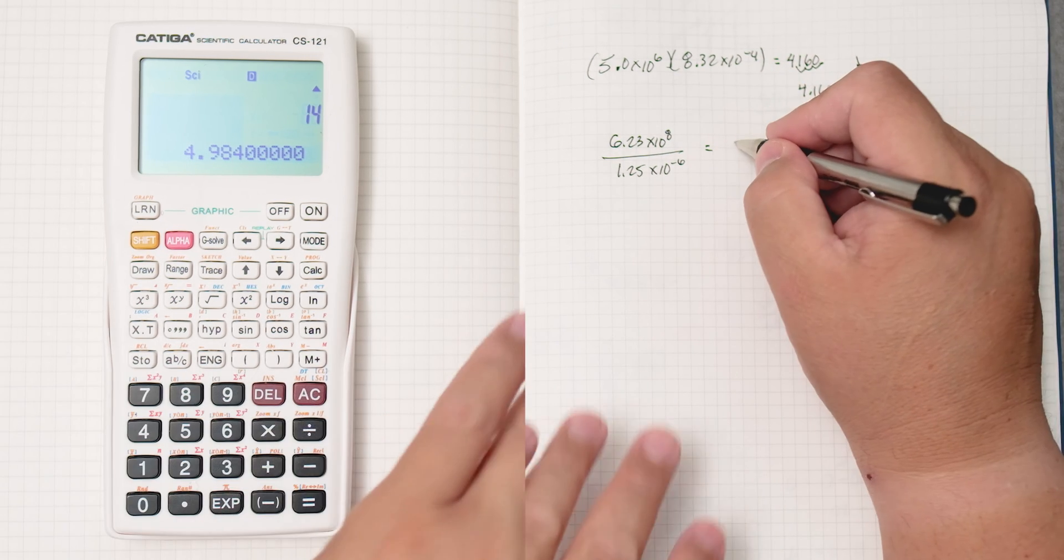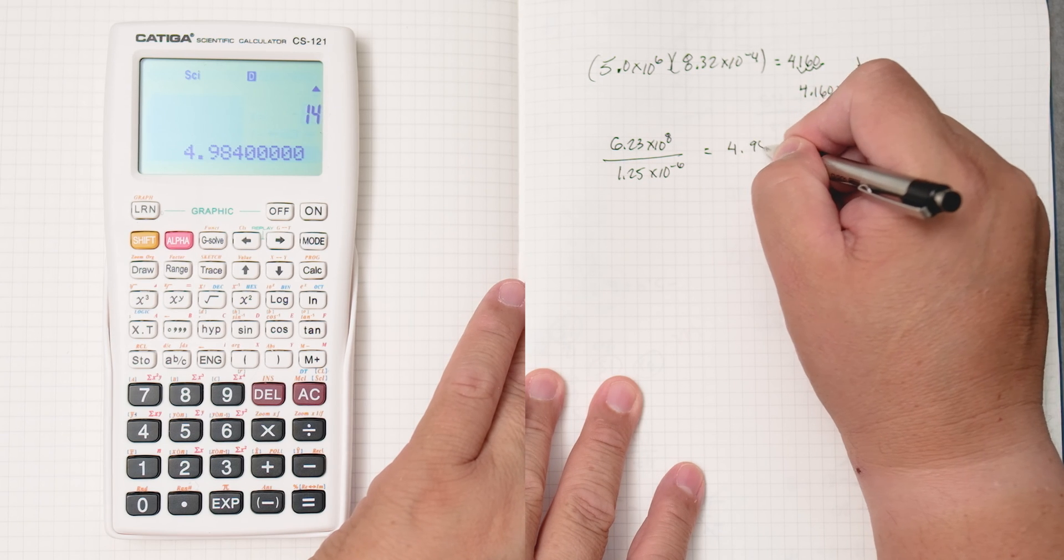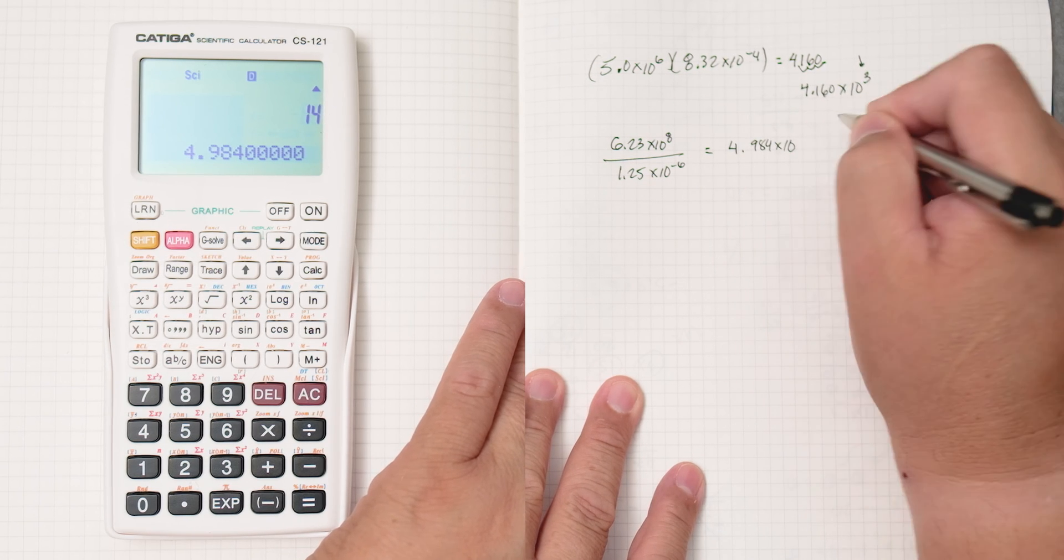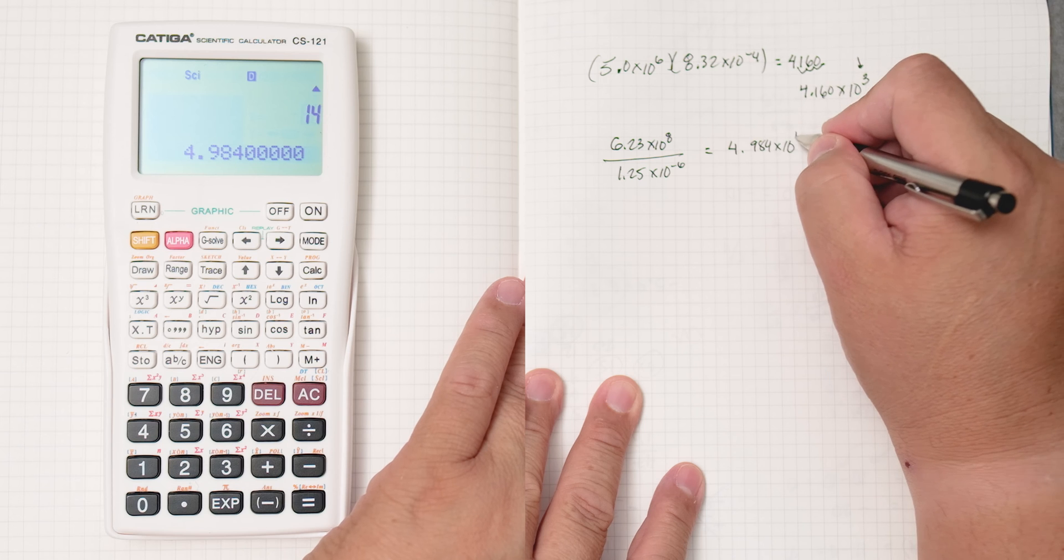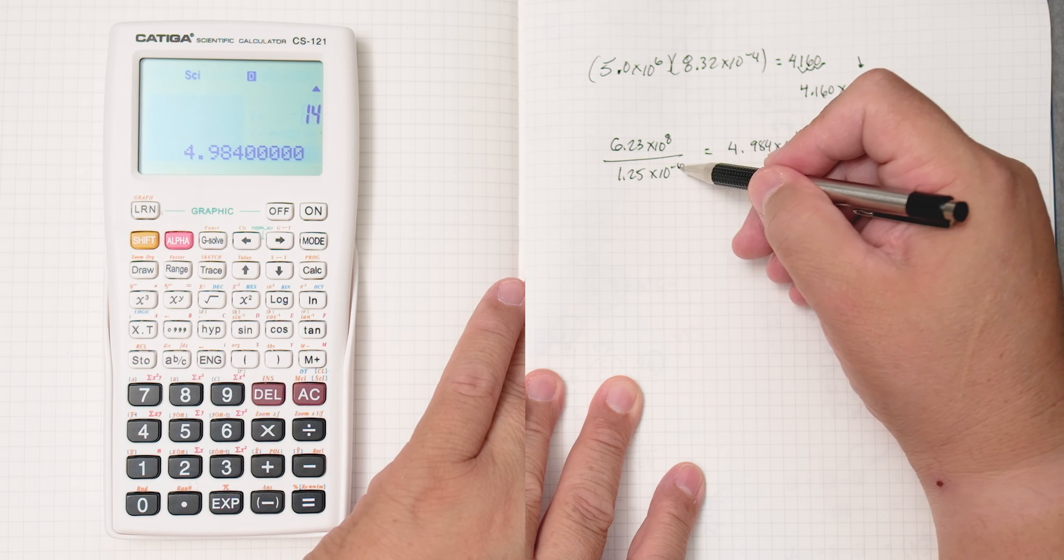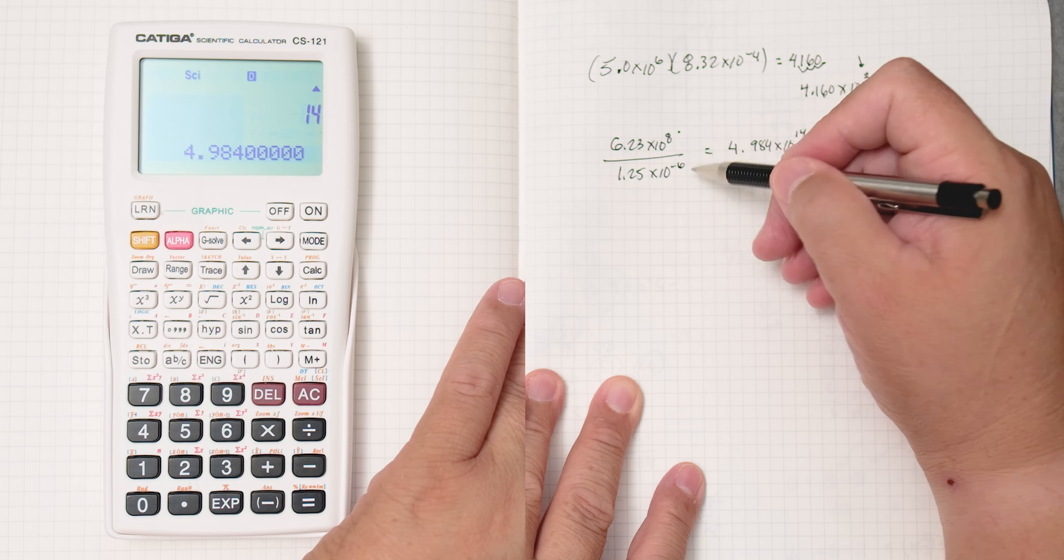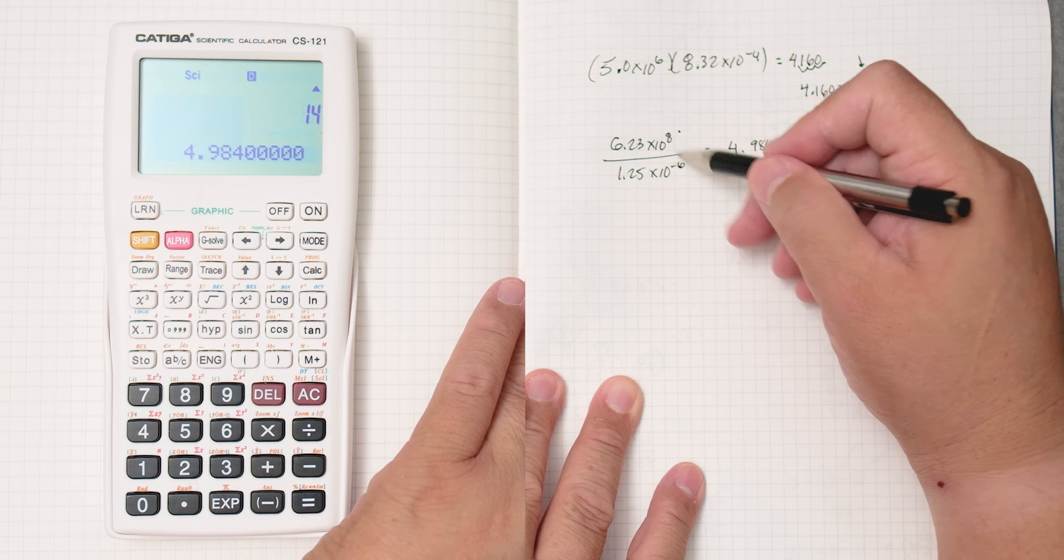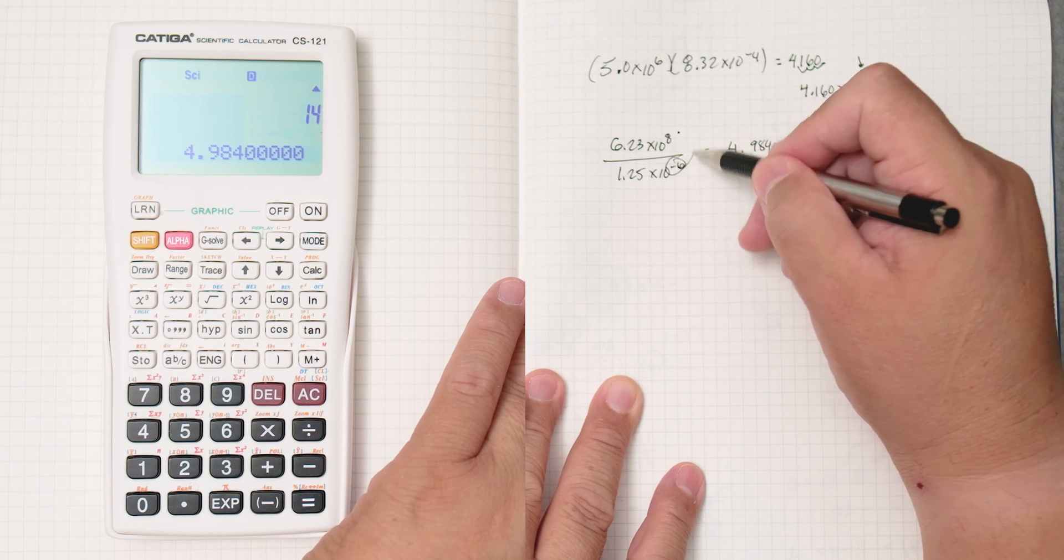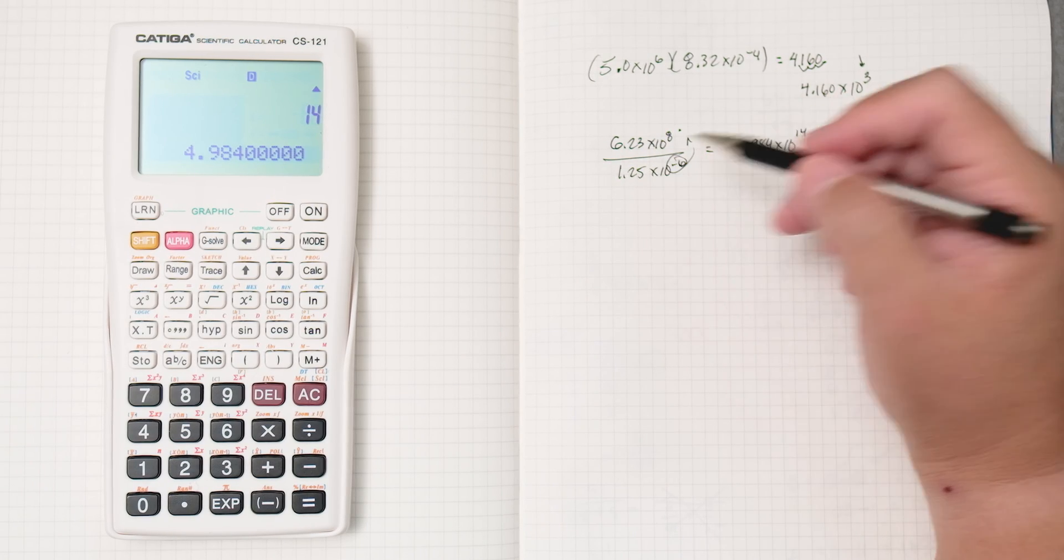And then we get 4.984 times 10 to the 14th. This negative 6 will go up here, and now I'll give you 12, 13, 14. This negative 6 will go up, and then you do the division.